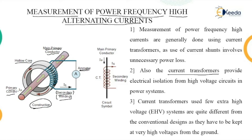This primary conductor experiences the current called primary current. High AC current passes through this conductor which is to be measured. If the number of turns on secondary is N2 or NS, and the primary number of turns or conductor is NP, then we can write the equation as Ip upon Is equals NS upon NP.